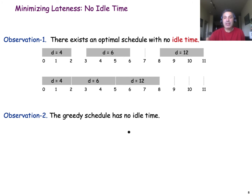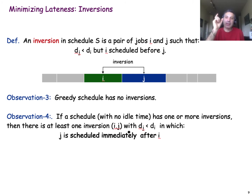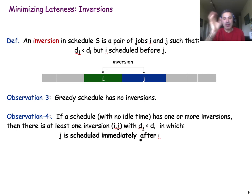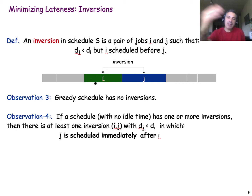Our greedy algorithm, by construction, doesn't create any idle time since it schedules jobs one after the other. The greedy algorithm also always schedules jobs in increasing order of deadlines. The question is: can an optimal solution have inversions? We say a schedule has an inversion if you can find a pair of jobs I and J such that I is scheduled before J even though I has a later deadline than J.